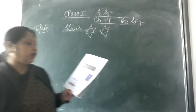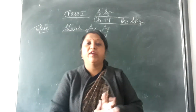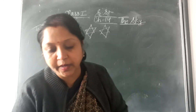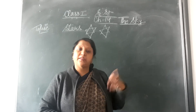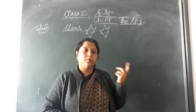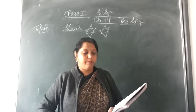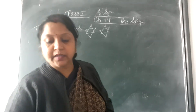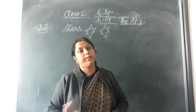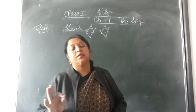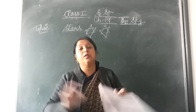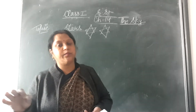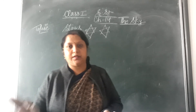Stars twinkle in the sky at night. Stars are also present during the day — stars apni jagah din mein bhi rehte hain. But we cannot see them because the light of the sun is very bright. Sun ki light bahut bright hoti hai, aur sun ke light ke kaaran stars aur moon chhup jaate hain.